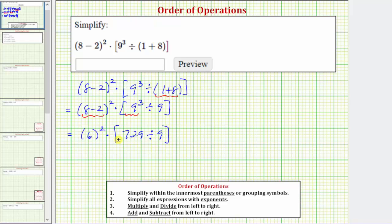So simplifying within these brackets or grouping symbols, we now perform this division. Seven hundred twenty-nine divided by nine is equal to eighty-one. So now we have six squared times eighty-one.